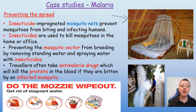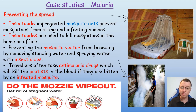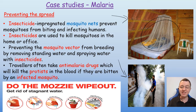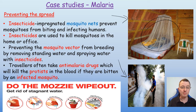Insecticides are used to kill mosquitoes in the home or office, and here you can see somebody spraying a street in Jakarta to kill any mosquitoes that may well be in the area transmitting the plasmodium parasite from mosquito to person.